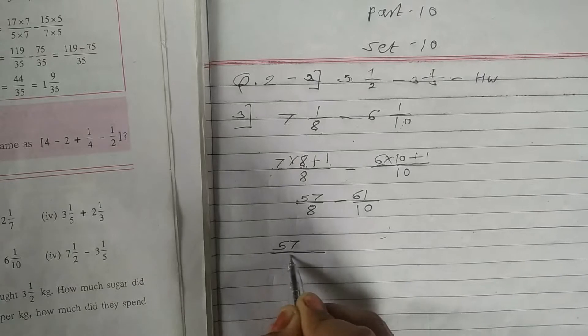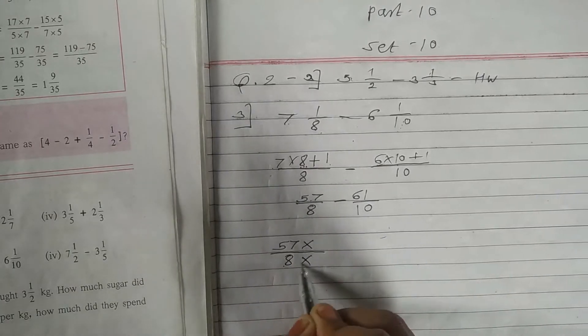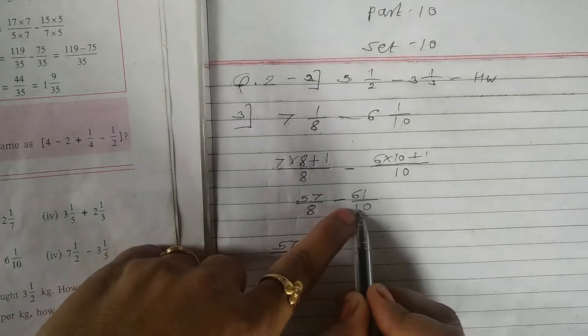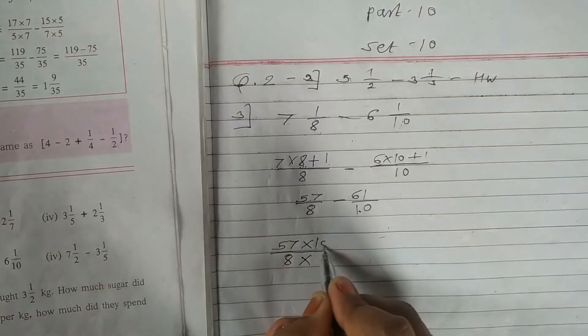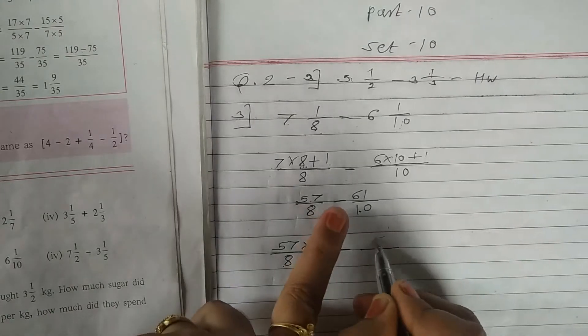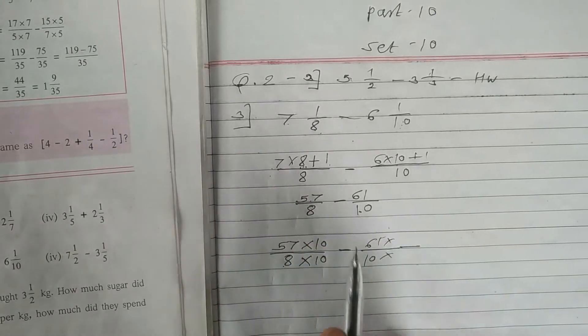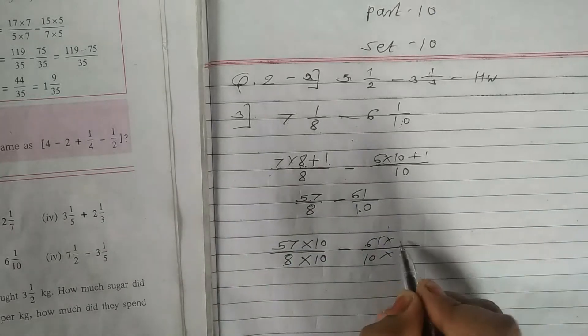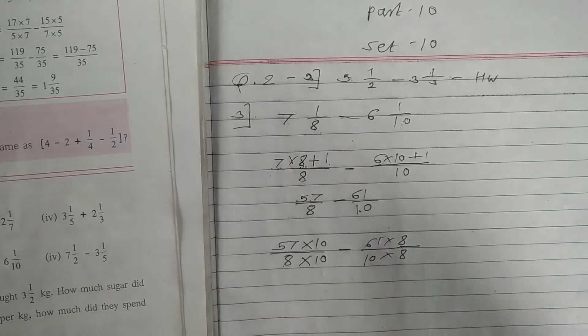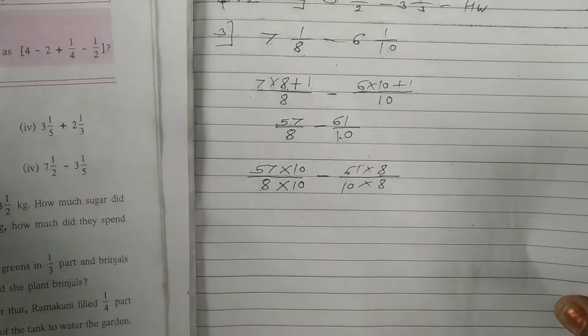Write first fraction as it is 57 upon 8. Multiply up multiply down with denominator of other that is 10. So 10 up 10 down minus 61 upon 10 as it is. Multiply by denominator of first is 8. So upside is 8. Those can do calculations on the same page.